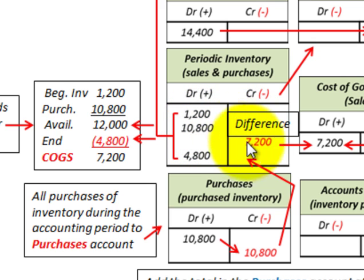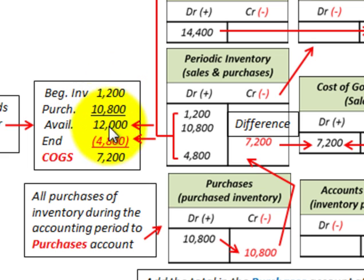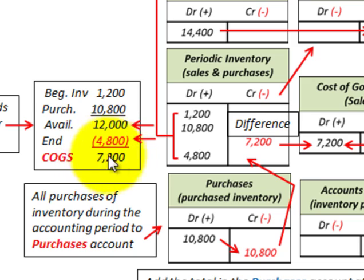To determine our inventory costs for the sales, the amount comes to $7,200. We know ending inventory is $4,800, beginning inventory was $1,200, and purchases for the period were $10,800. Adding beginning inventory $1,200 plus purchases $10,800 gives goods available for sale of $12,000. Subtracting ending inventory of $4,800 gives cost of goods sold of $7,200.